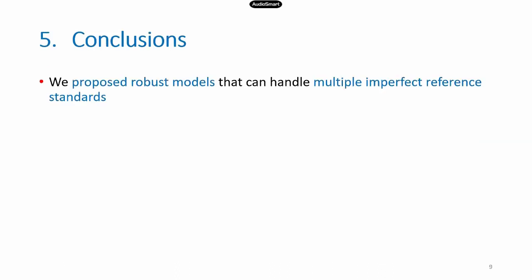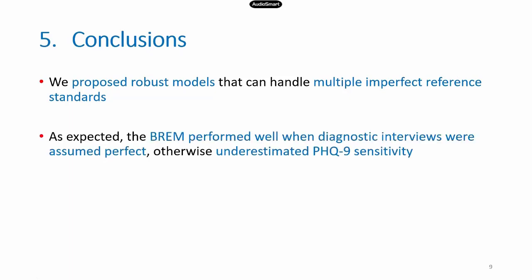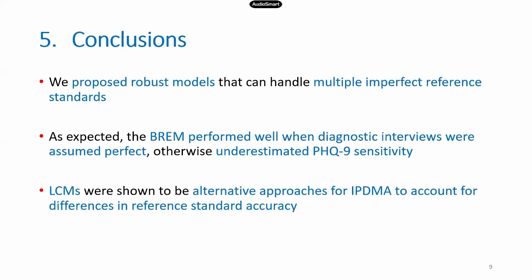The take-home message is that we have proposed both frequentist and Bayesian latent class model approaches that can handle multiple reference standards. The bivariate random effects model performs well in an IPDMA context when reference standards are assumed perfect, which is expected. But when reference standards are imperfect, it underestimates PHQ-9 sensitivity. Latent class models are good alternatives to deal with the problem of imperfect reference standards in individual participant data meta-analysis.